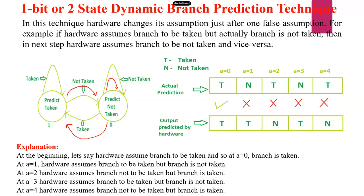Here we have an example. T for taken branch, N for not taken branch. The output predicted by hardware: the hardware assumes that the branch is a taken branch. What is the actual prediction? The actual branch is taken. So both are the same, meaning you will get the correct result. So you retain that same state. The hardware prediction is taken, actual prediction also taken, so you retain the same state — that is one correct prediction.